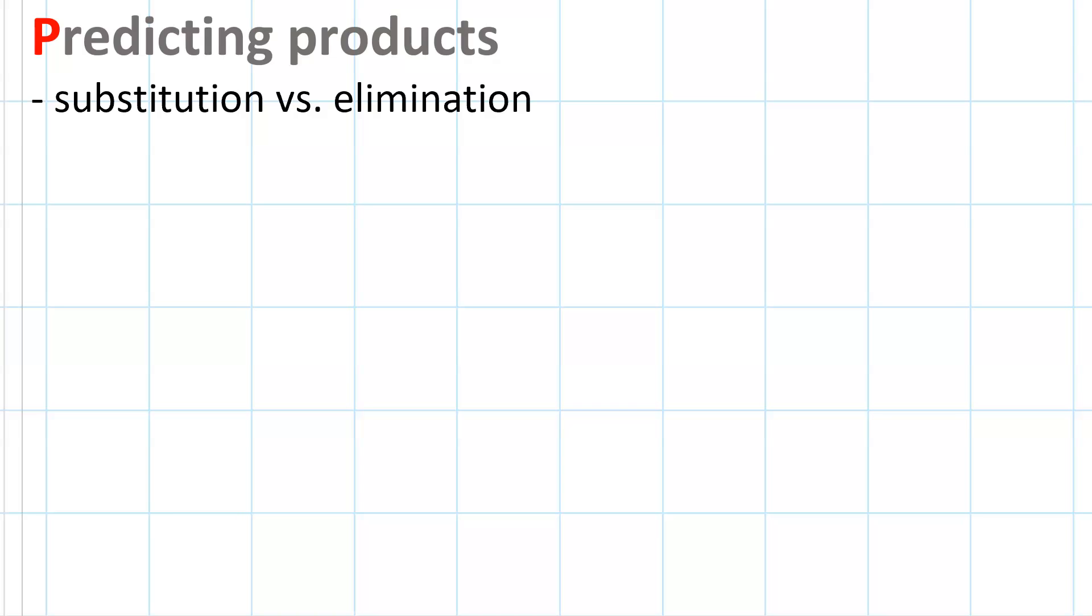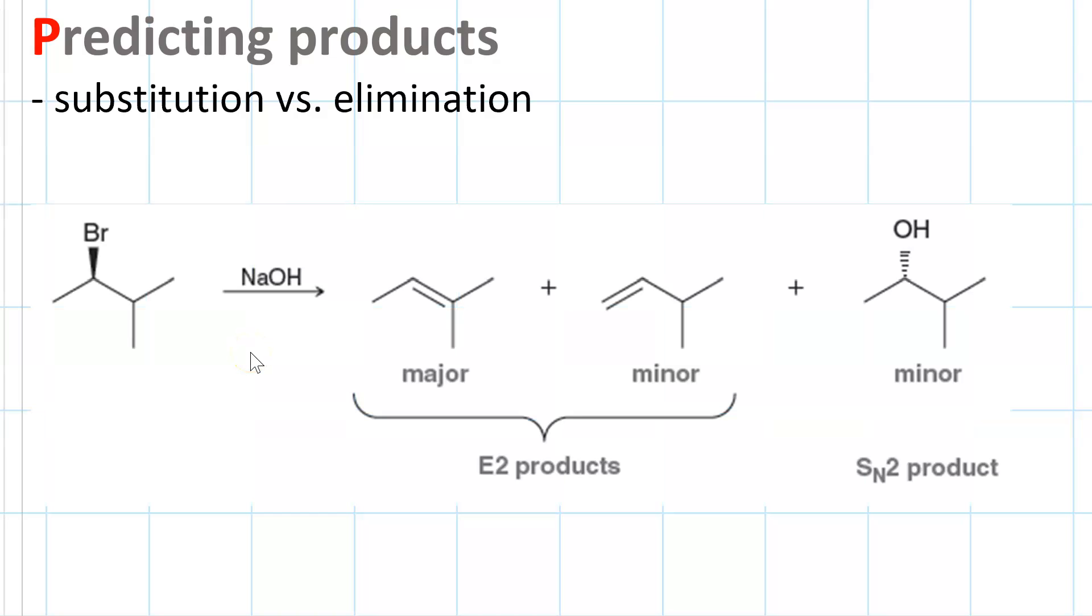Predicting the products in substitution and elimination reactions. Sometimes you get a mixture of mechanisms, like when you treat a secondary alkyl halide with a reagent like sodium hydroxide. Your major product is the Zaitsev E2, a minor product is the Hoffman E2, and another minor product is SN2.